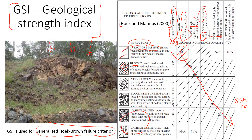Now let's look at what we have in this picture — it's one of the rock slopes along a major road, a photo I took a few years ago. We can look at the structure: this rock mass has been weathered and has lots of discontinuities — I'll just highlight them. You can see that clearly. There are a few joints here, and to me it looks more like very blocky.